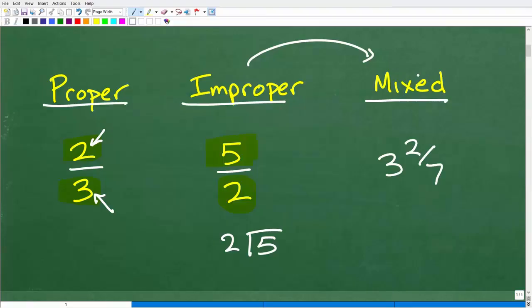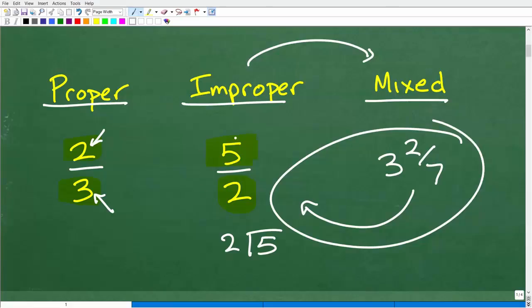A mixed number fraction is something like 3 and 2/7, and we could take this fraction and write this as an improper fraction. That's what we're going to be talking about in this video. We're going to be focused specifically on how to rewrite a mixed number as an improper fraction.